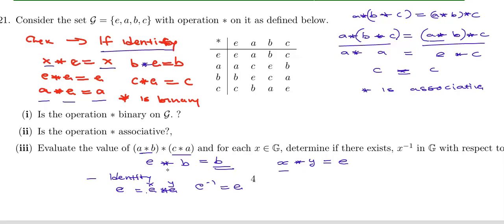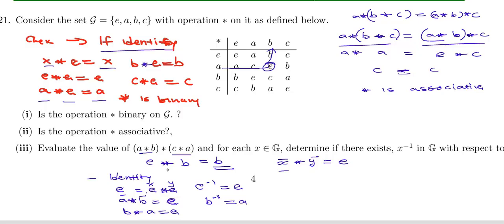Now for element a: a star b — checking the table — is equal to e. Since we are getting e as our answer, b is the inverse of a. Also, b star a is also giving us e because b and a are meeting there too. So b star a and a star b are one and the same, meaning b and a are inverses of each other.